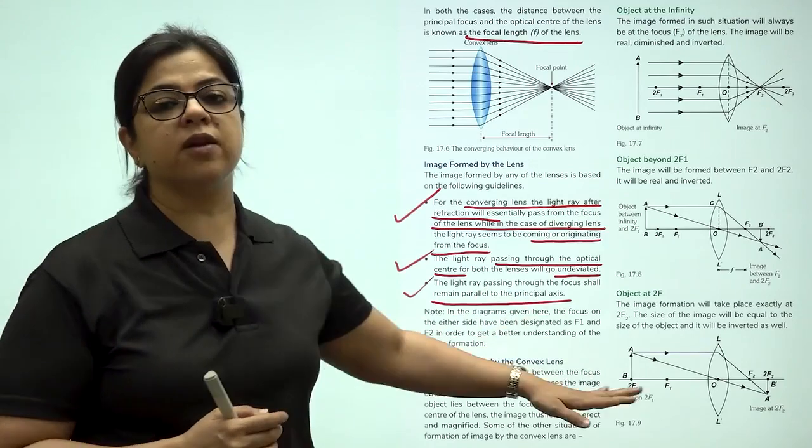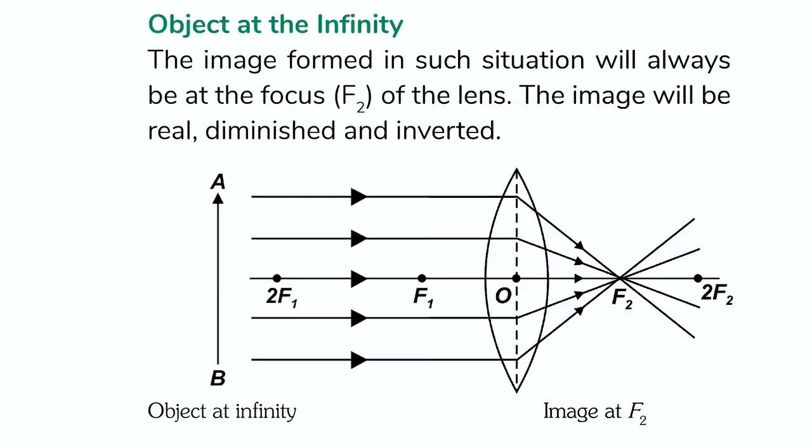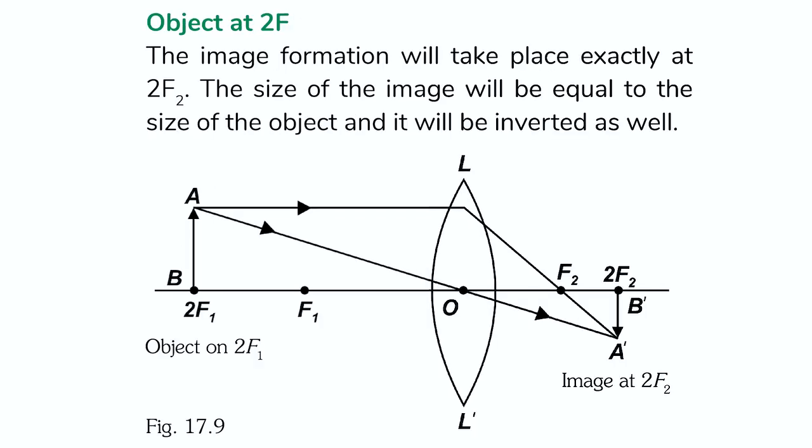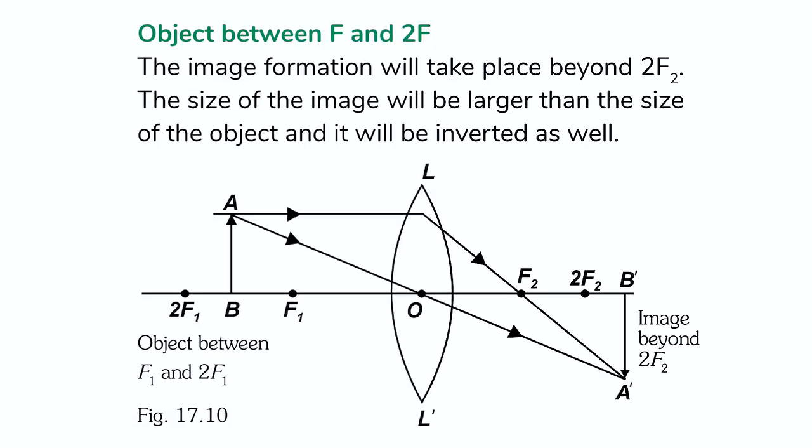Let us understand how the image formation in convex lens takes place when object is at different places. When the object is at infinity, the image formed will always be at the focus f2 of the lens. The image will be real, diminished and inverted. When the object is beyond 2 f1, the image will be formed between f2 and 2 f2. It will be real and inverted. When the object is at 2 f, the image formation will take place exactly at 2 f2. The size of the image will be equal to the size of the object and it will be inverted as well.